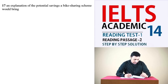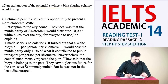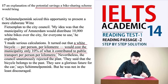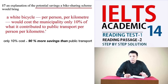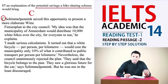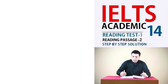Next: 'An explanation of the potential savings a bike sharing scheme would bring.' Keywords are 'potential savings.' In the fourth and fifth lines of paragraph C, it explains that a white bicycle per person per kilometer would cost the municipality only 10 percent of what it contributed to public transport per person per kilometer. This means it would have 90 percent more savings than public transport, so the answer is C.